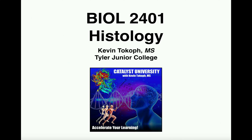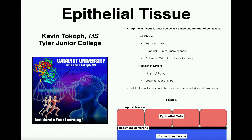Let's take a look at epithelial tissue. Epithelial tissue is made up of epithelial cells, and the tissue itself is classified by the cell shape and the number of cell layers. Every time we name one of these tissues, we're going to have something indicating the cell shape and something indicating the number of layers.